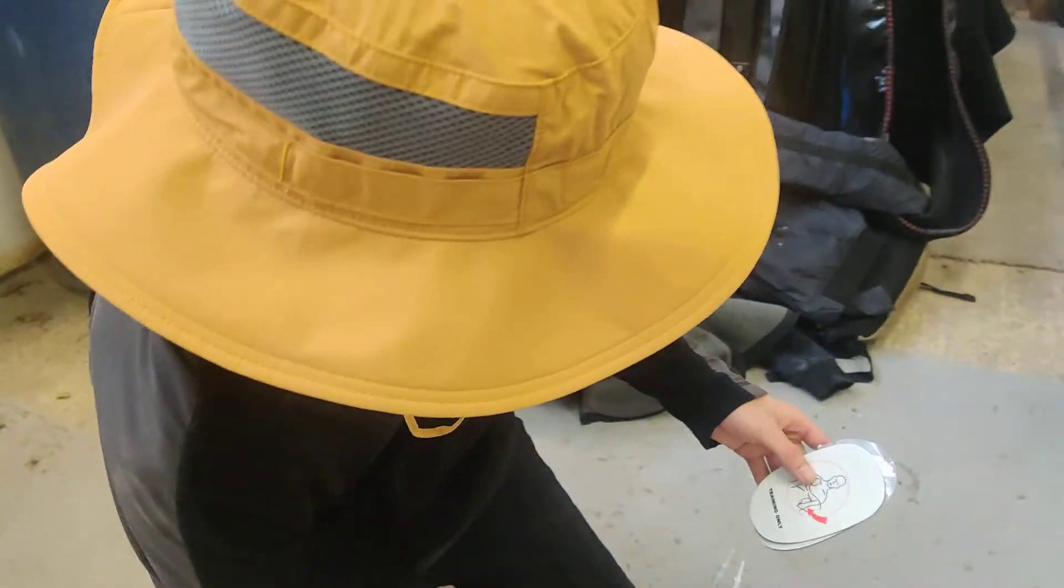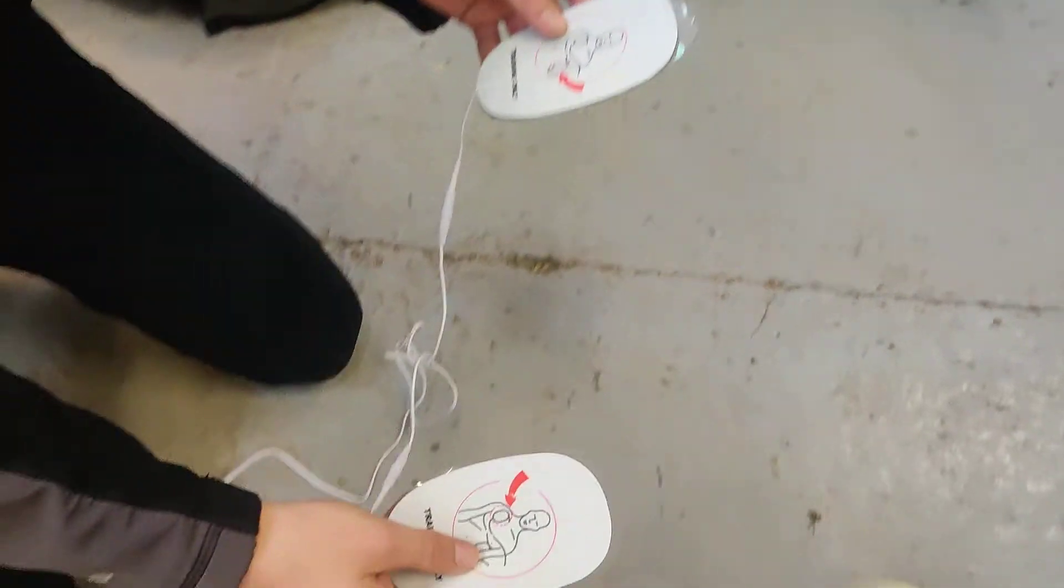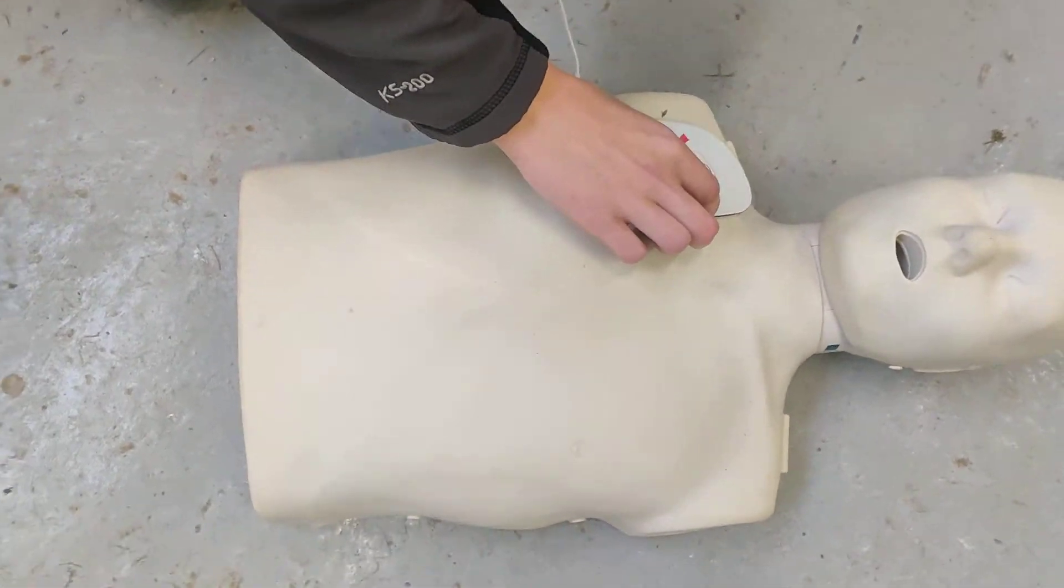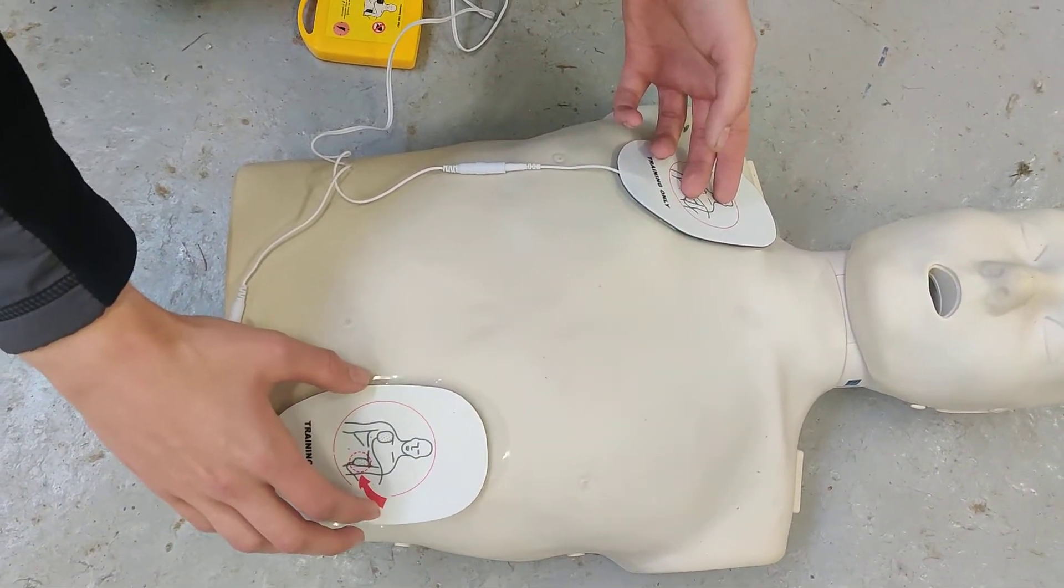I'm going to demonstrate how to use a defibrillator. The two pads have an indication as to where they're meant to go on the body. This one goes on the top of the chest and this one here is just below the left.